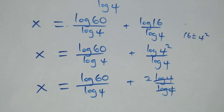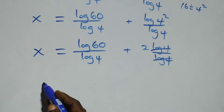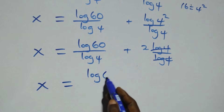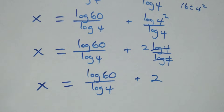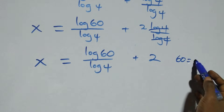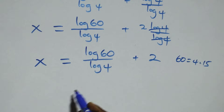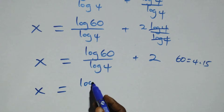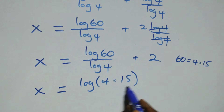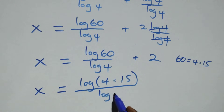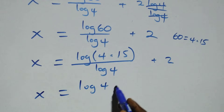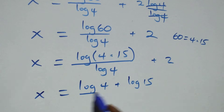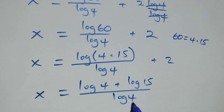The log 4 cancels, leaving 2. So we have x equals log 60 over log 4 plus 2. Also, 60 can be expressed as 4 times 15, so x equals log(4 times 15) over log 4 plus 2. Applying the product rule, this becomes x equals log 4 plus log 15 over log 4 plus 2.